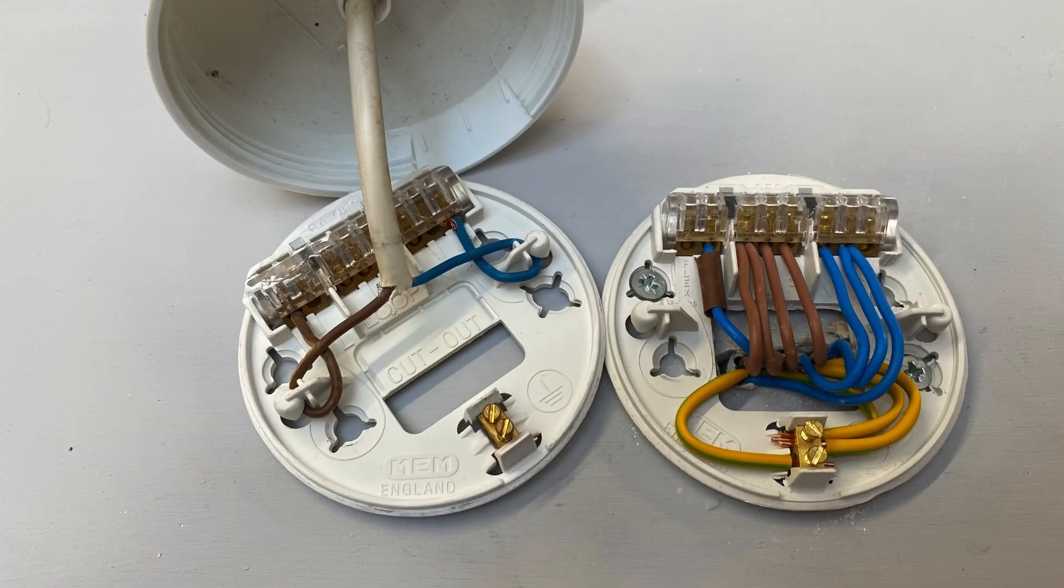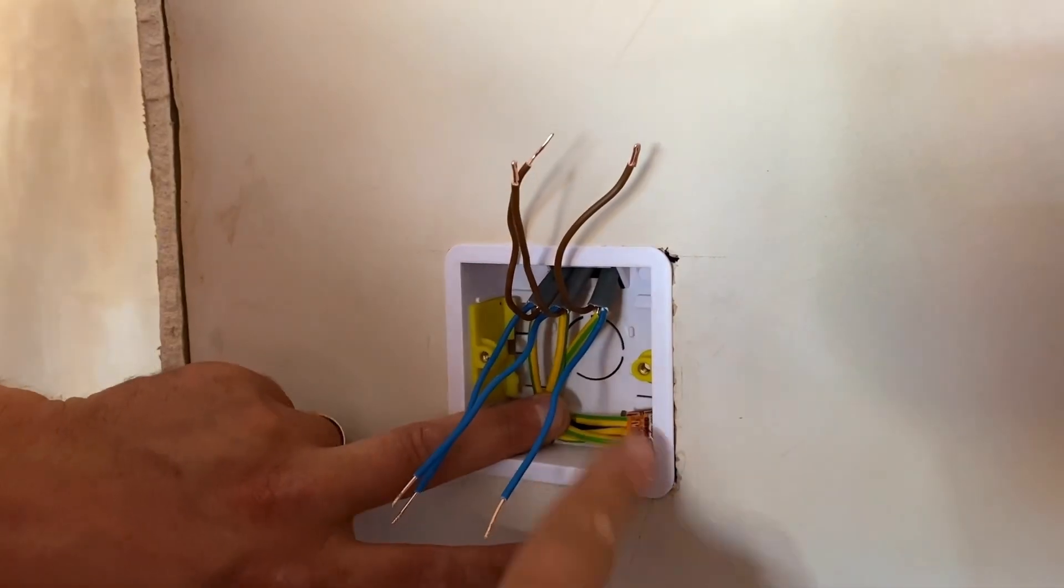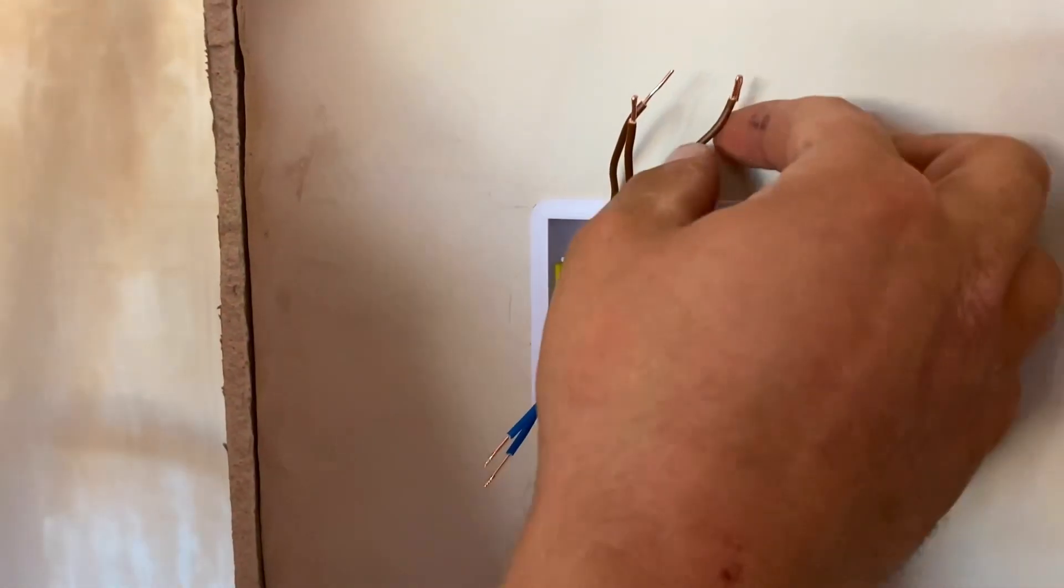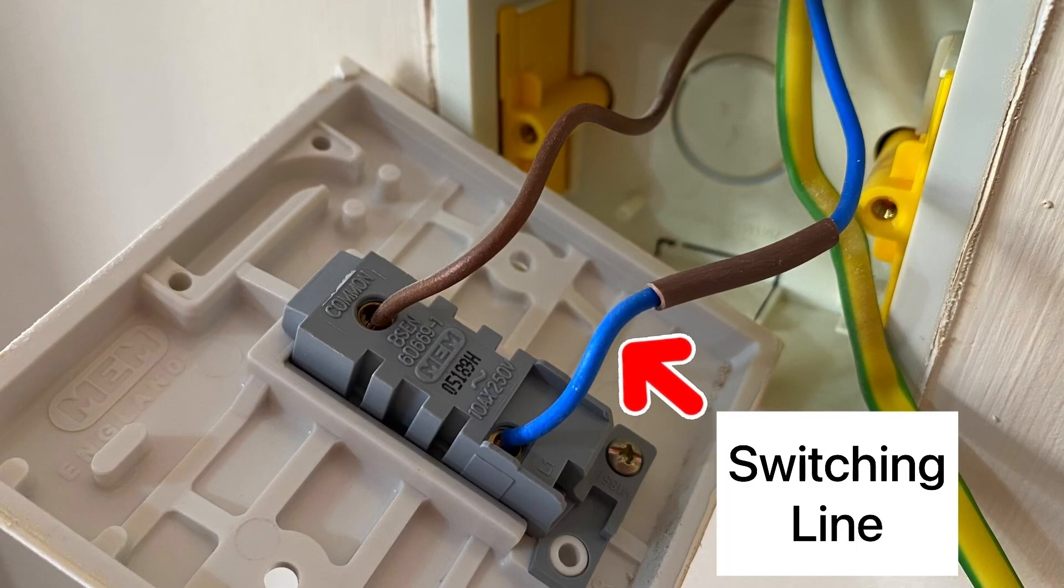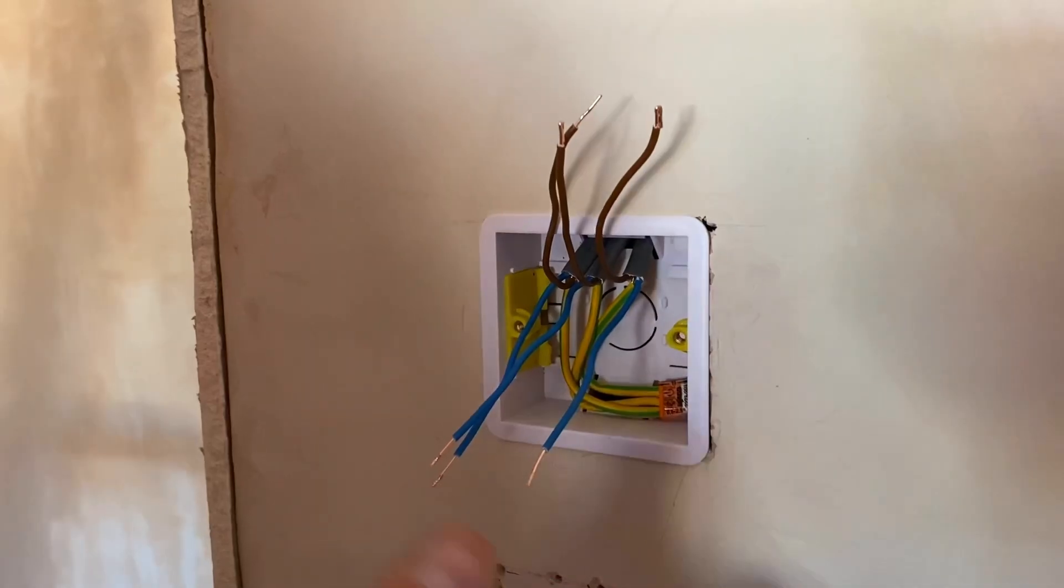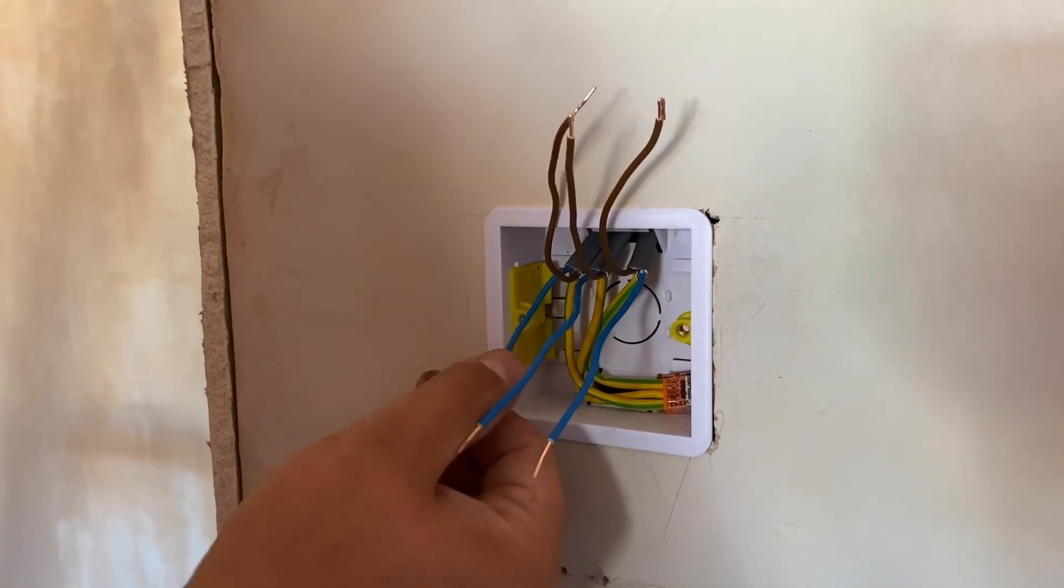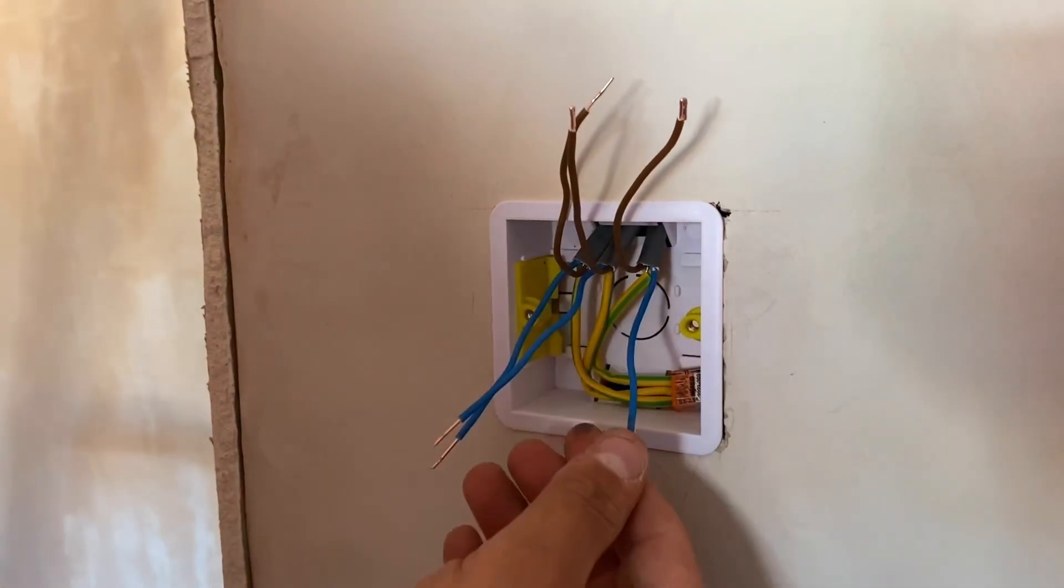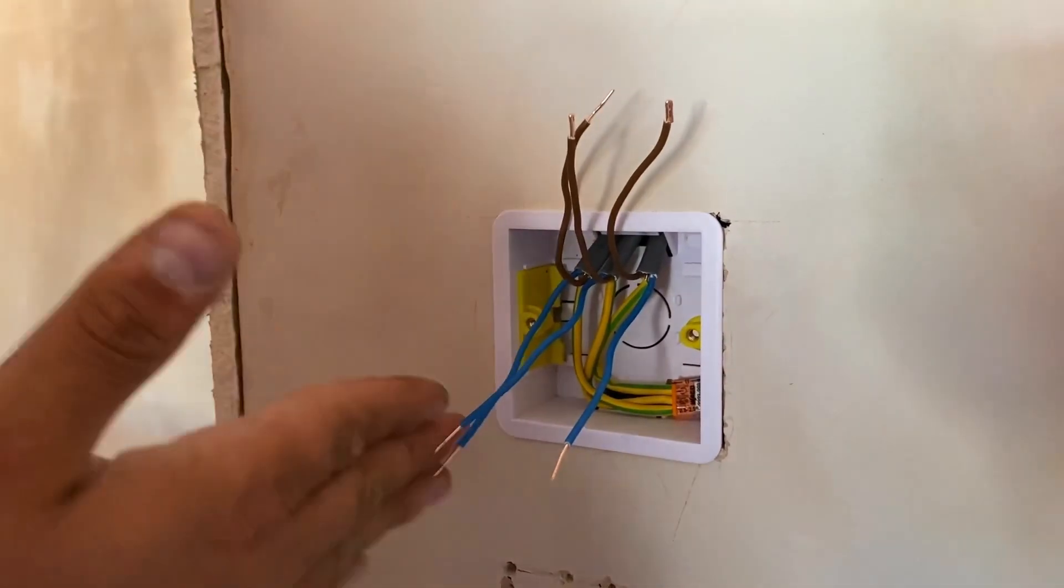As you can see here, usually we used to maybe be seeing one brown, one blue conductor, this blue conductor being sleeved as a switching line. But because we've fed the switch now, we actually have three cables in here. Now that could be a feed in and then a feed out, but actually on this one it's not. So we've only got feed in because this is the last point.